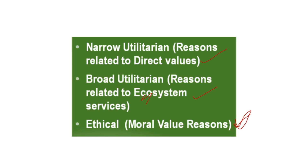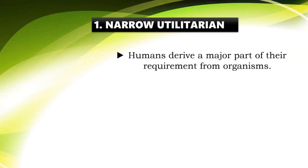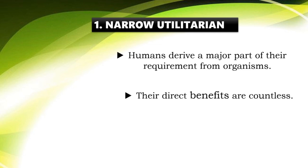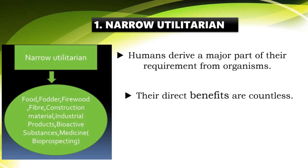Under Narrow Utilitarianism, humans derive a major part of their requirements from organisms. The direct benefits are countless, but we can sort out the maximum: food, fodder, firewood, fiber, construction material, and many medicines and bio-active substances that we use directly from biodiversity.